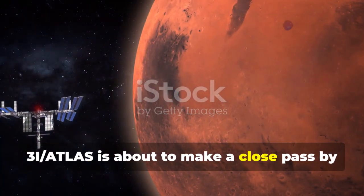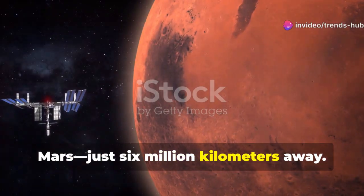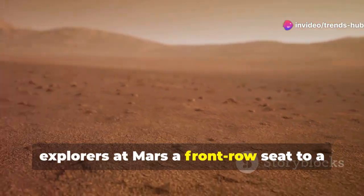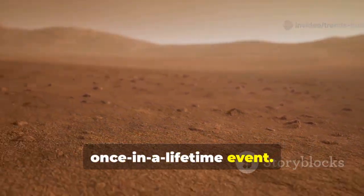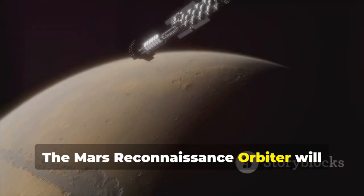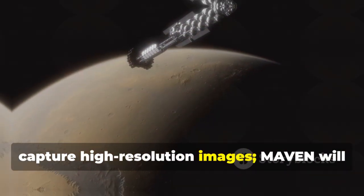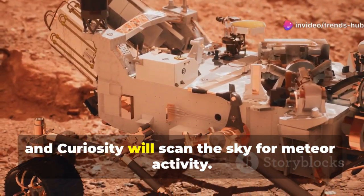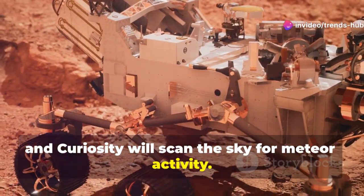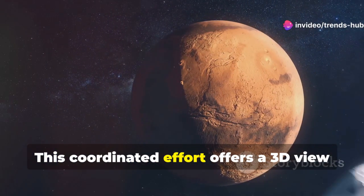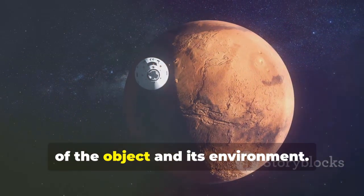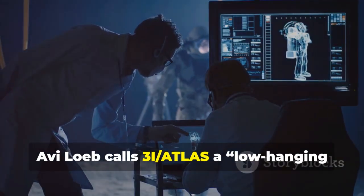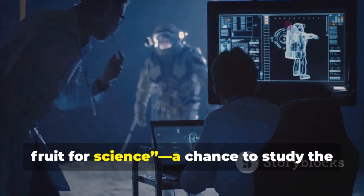3i-slash-Atlas is about to make a close pass by Mars, just six million kilometers away. This proximity gives our robotic explorers at Mars a front row seat to a once-in-a-lifetime event. The Mars Reconnaissance Orbiter will capture high-resolution images. MAVEN will analyze the comet's gases. Perseverance and Curiosity will scan the sky for meteor activity. This coordinated effort offers a 3D view of the object and its environment.